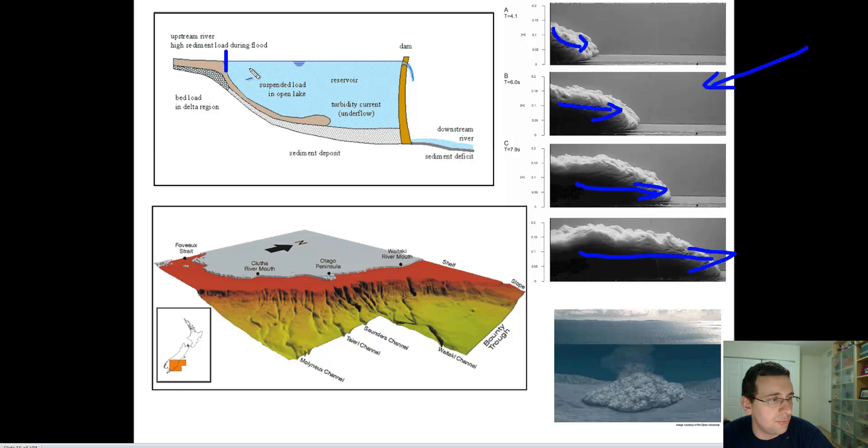basically the whole thing will just flow and collapse to the bottom, and that's what initiates the turbidity current or the underflow of the sediment layer into the lake or into the river, whatever you're talking about.